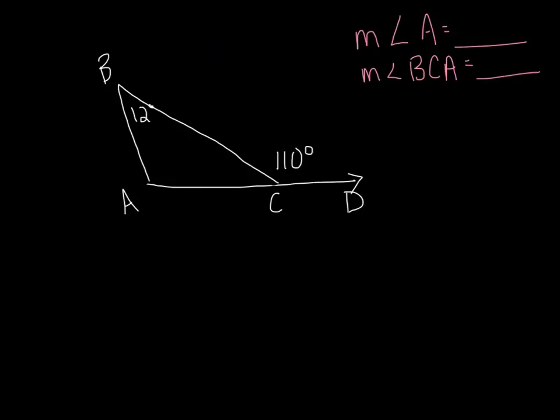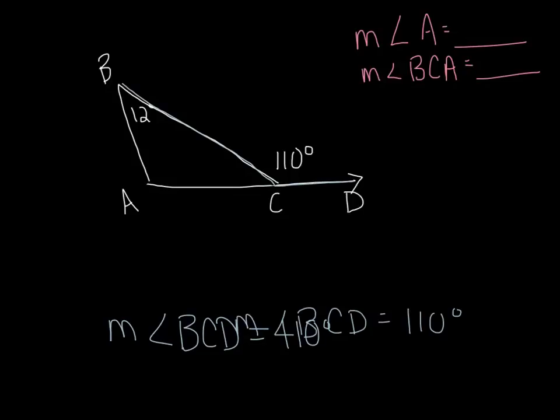So the exterior angle theorem for triangles can help us find missing angles in a triangle. What we can do here is see that the measure of angle BCD, which is our exterior angle, is equal to 110 degrees. And the exterior angle theorem tells us that this exterior angle is equal to the sum of these two remote interior angles, angle B and angle A. So if we add A and B together, we're going to get 110 degrees.